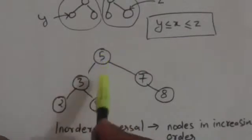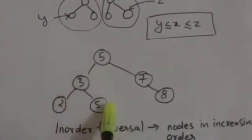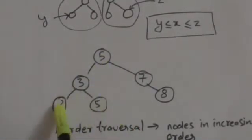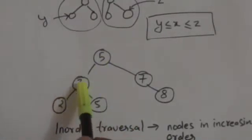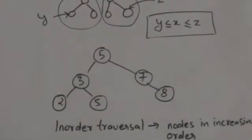We will get the values stored in the nodes of a binary search tree in increasing order if we traverse it using in-order traversal.